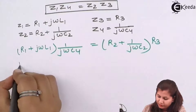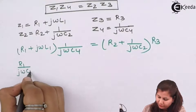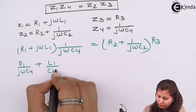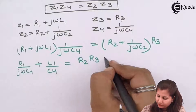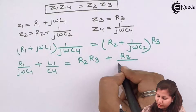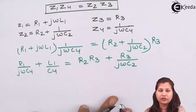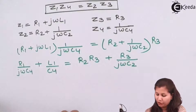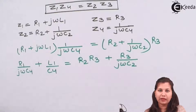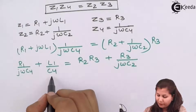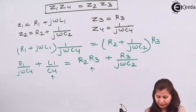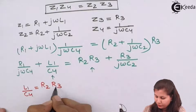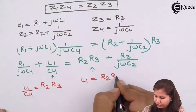Multiplying out: we get R1/(jωC4) plus, when we multiply jωL1 by 1/(jωC4), the jω terms cancel and we are left with L1/C4. On the right side we get R2·R3 + R3/(jωC2). Equating the real parts: L1/C4 = R2·R3, so L1 = R2·R3·C4.